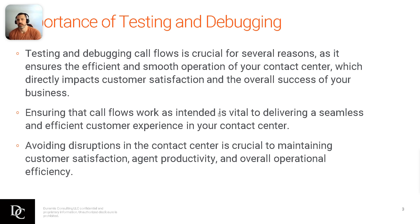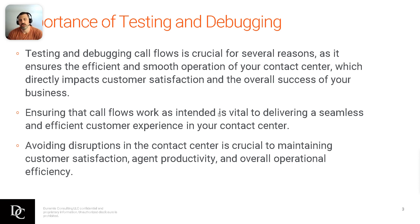So the importance of testing and debugging: if you don't already know, it's crucial for several reasons. First, making sure of the efficient and smooth operation of your contact center, which directly impacts customer satisfaction and overall success of your business. Making sure that call flows work as intended is vital for delivering a seamless and efficient customer experience. What you would hate to have happen is if you do not test and debug and automatically go live — your customer could get disconnected, or maybe they press option one and they're routed back to the menu. You want to make sure that through QA testing as well as UAT, you go through and verify everything is done. It all starts at the Architect level, doing functional testing to make sure your flows are working correctly before handing them off.